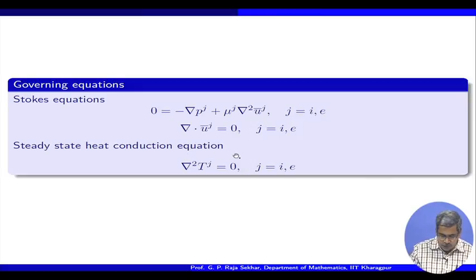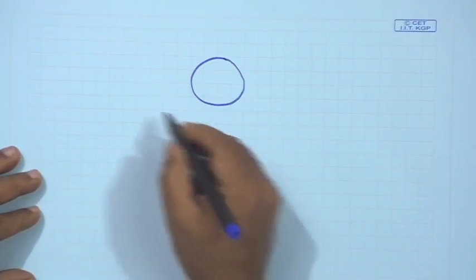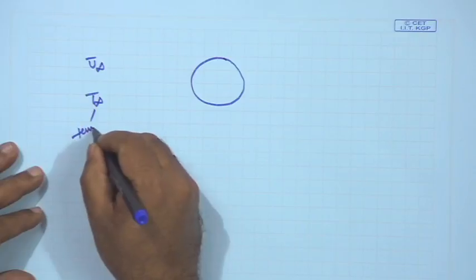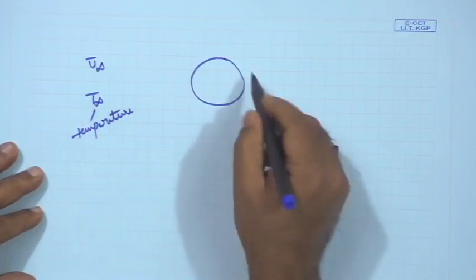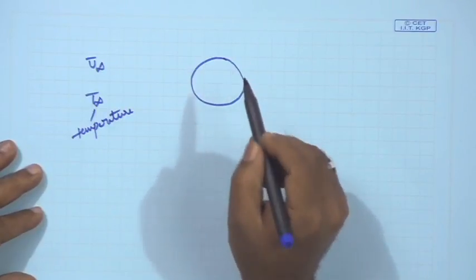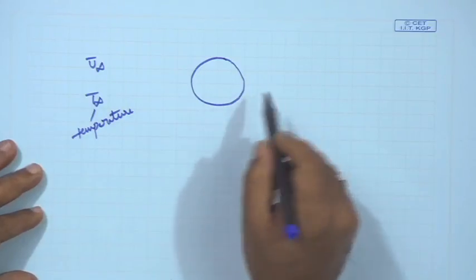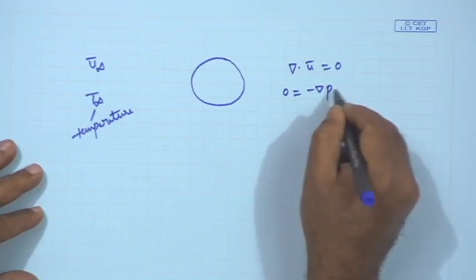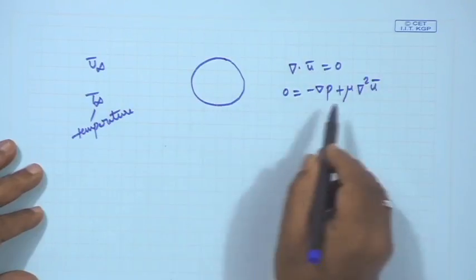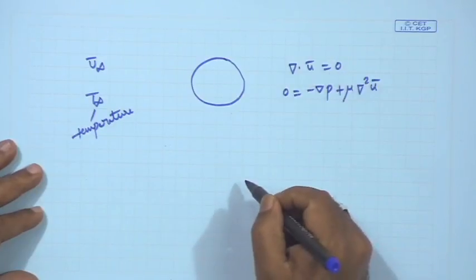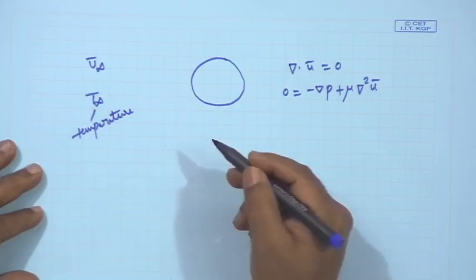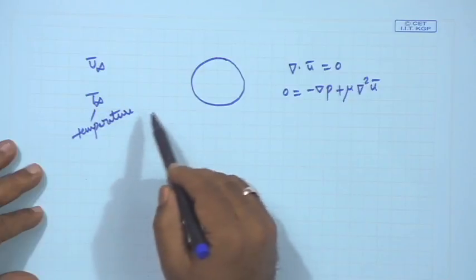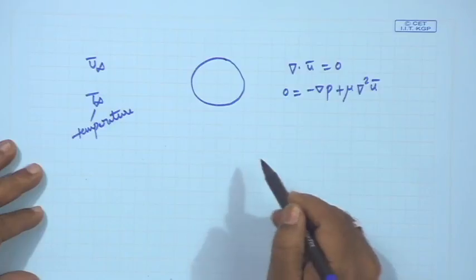Before we come to the heat conduction equation — we have a drop, you have a uniform far field and then a far field temperature. When we have the fluid case, we use the corresponding governing equations, which are nothing but balance of linear momentum and conservation of mass. For both exterior and interior we are using these — conservation of mass and linear momentum balance. Now, once we have additional temperature, naturally the concept of energy comes in, so one has to consider the corresponding energy balance because you have a temperature field set in.